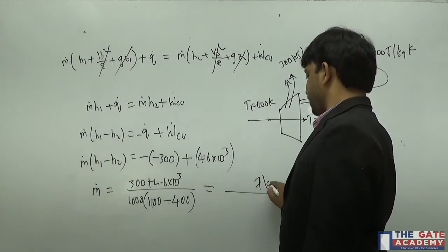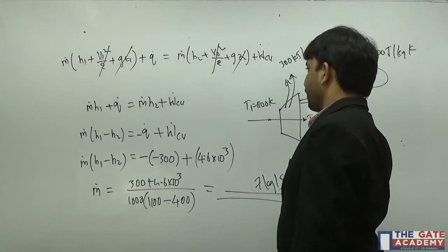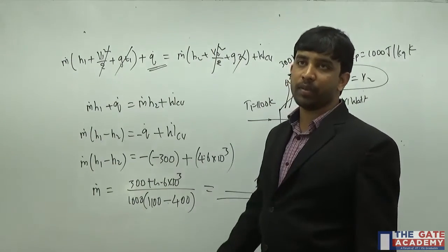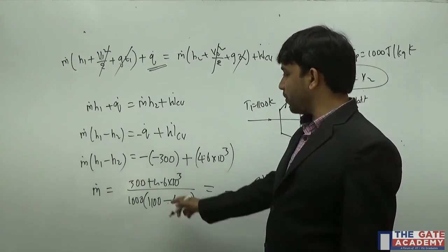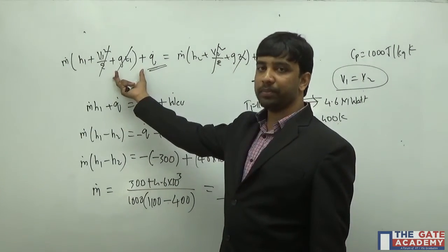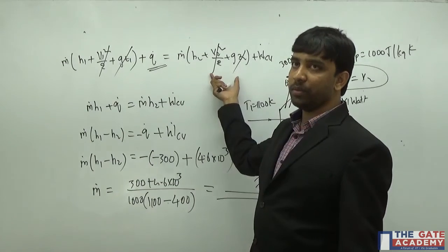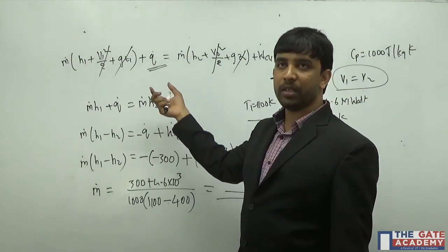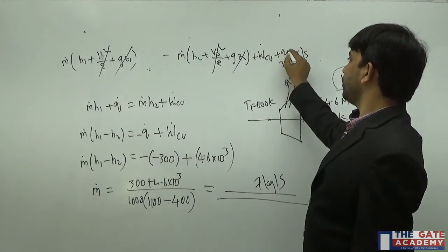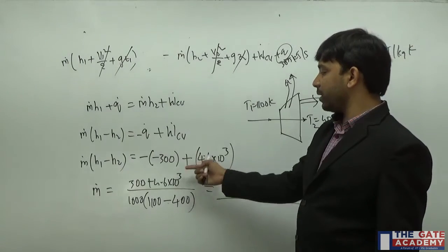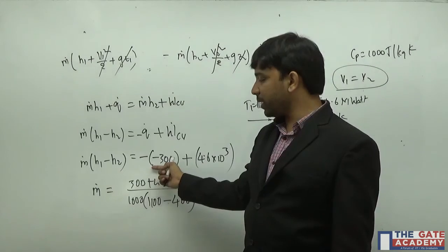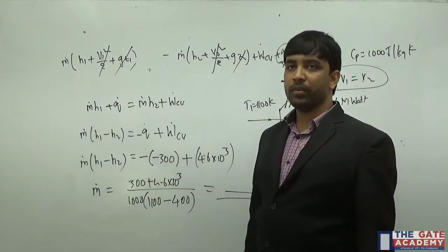The mass flow rate is approximately 7 kg per second. Note on sign convention: we initially assumed heat is supplied to the system as positive, but since heat is actually lost from the turbine casing, it is taken as negative (−300). This means heat leaving the control volume is added to the work output in our energy balance.